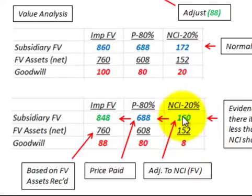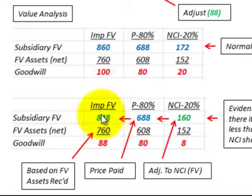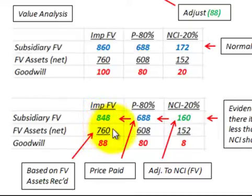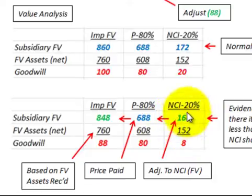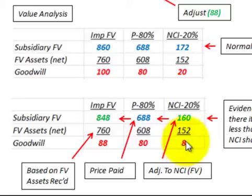To determine our goodwill, we take the new estimate of $160,000 and add that to the parent's portion of $688,000, so the implied total fair value of the subsidiary would be $848,000. The fair value of the net assets remains the same as proportioned out. To determine goodwill, we take the non-controlling interest portion of $160,000 and subtract its proportion of the fair value of the net assets of $152,000, giving us $8,000 for the non-controlling interest portion.